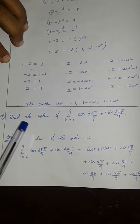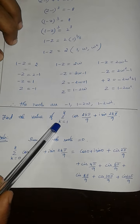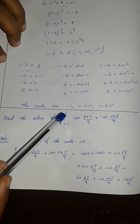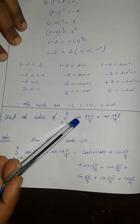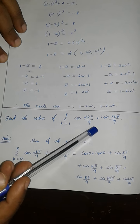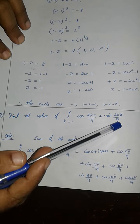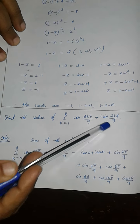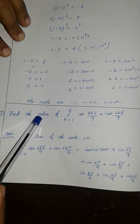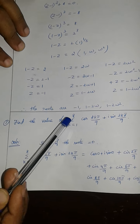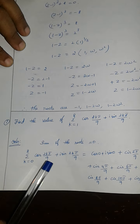Question No. 7. Find the value of summation k equal to 1 to n of cos(2kπ/9) plus i·sin(2kπ/9). This is the value, k equal to 1 to 8.